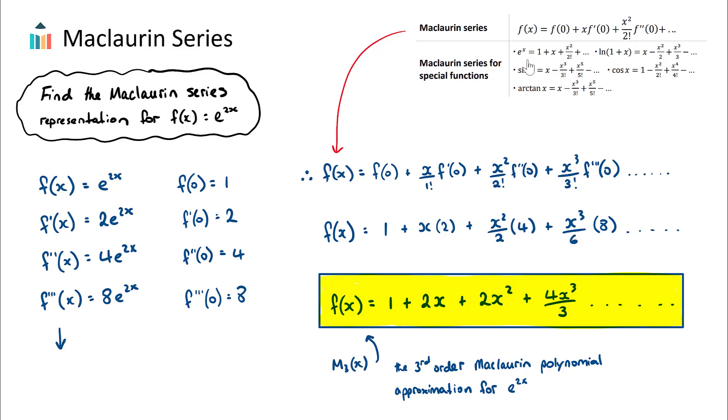So in some questions, they might require us to just go to the formula booklet and understand that sine x, for example, the Maclaurin series polynomial for this is just these terms, and we can use them straight away. But if in an IB exam, we want to find the Maclaurin series representation or the Maclaurin series polynomial for something that's not one of these, we will need to go through the steps that I just showed then.